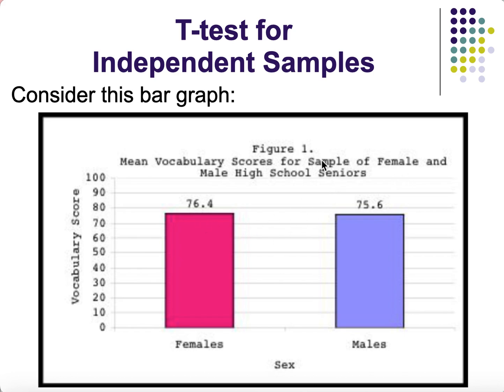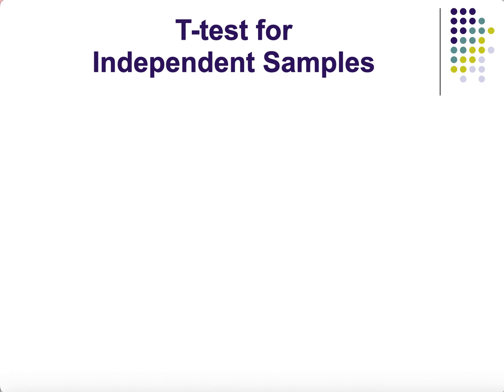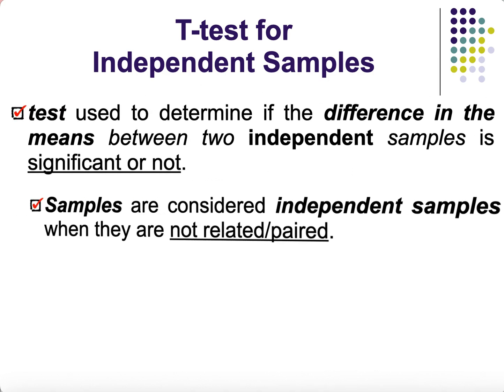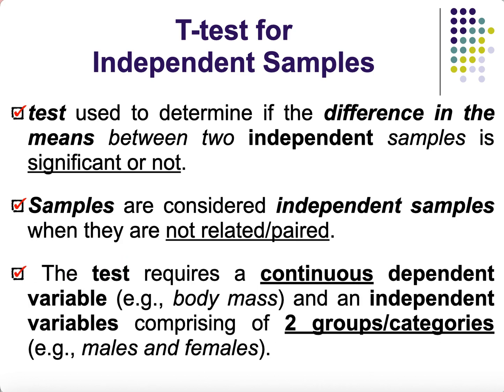In reality, you cannot conclude that female vocabulary scores are higher than males, because this data is taken from a sample. Sample data varies from the population it's drawn from. That's the purpose of inferential statistics — to check whether we can generalize to the population. That's also why we use the word 'significant': is the difference not due to chance?